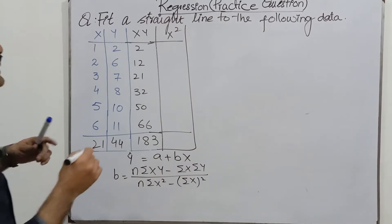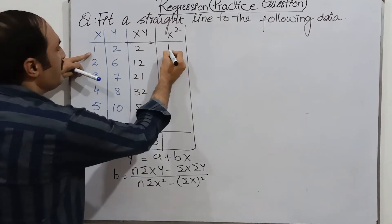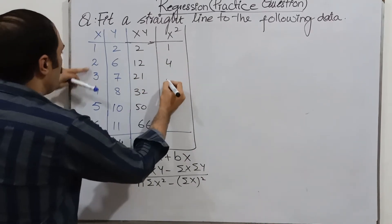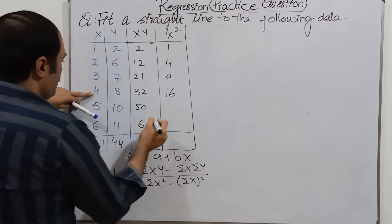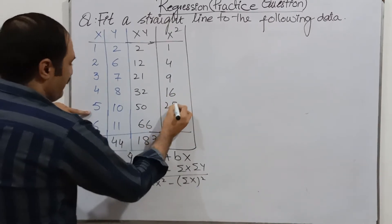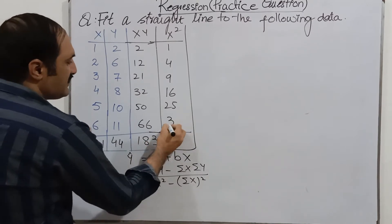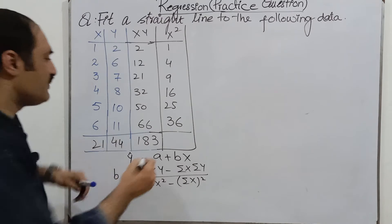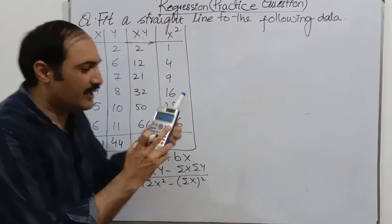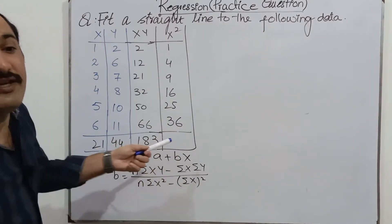Next what we want? x square. What we want here is x square. So we take the square of every observation of x. One square is one, two square is four, three square is nine, four square is sixteen, five square is twenty five, six square is thirty six. So here the sum of this one is, you can use calculator, its sum is ninety one.